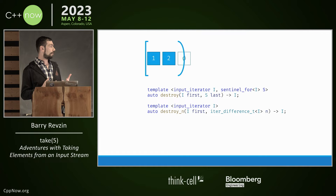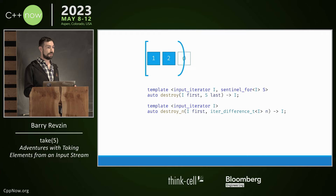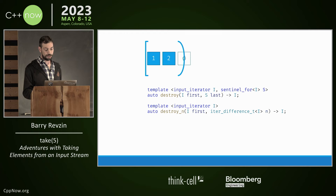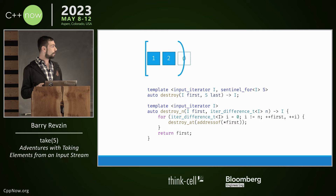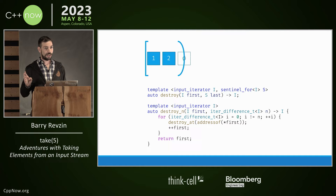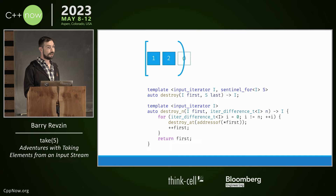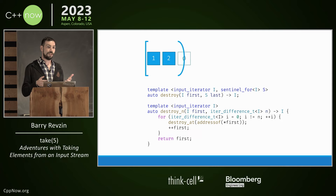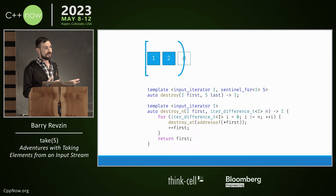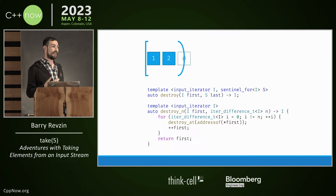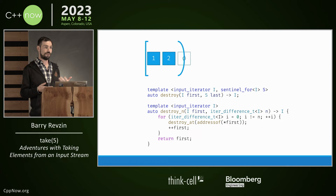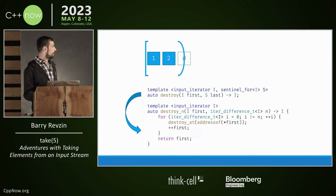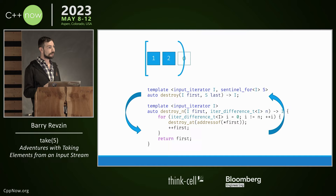There are many pairs of algorithms in the standard library — one taking iterator-sentinel and one taking iterator-count. If we try to implement destroy_n, we write a for loop counting up to n, incrementing first as we go, destroying every element. Going in the direction of implementing destroy in terms of destroy_n isn't generally possible: how do we determine n? With random access iterators we can subtract, but for an input iterator — the minimum constraint — we'd need to walk the whole range to compute n, then can't walk it again. So the only option is the other direction, using counted_iterator.